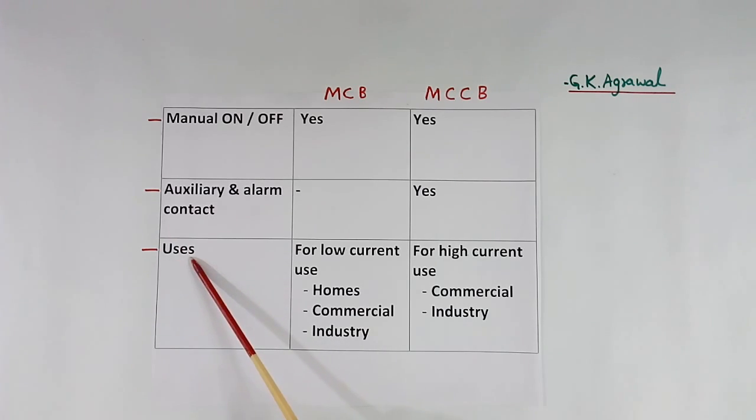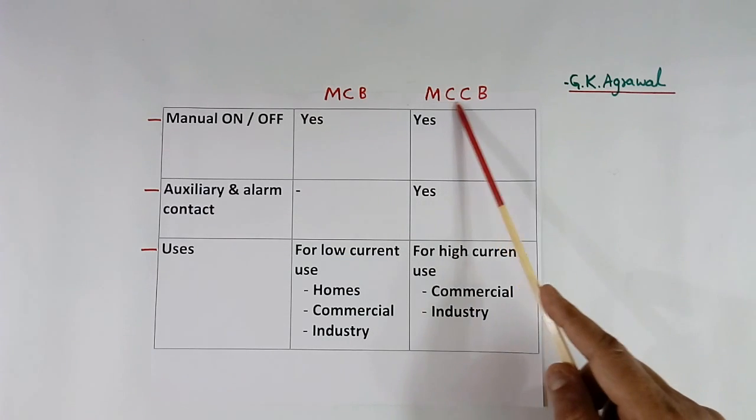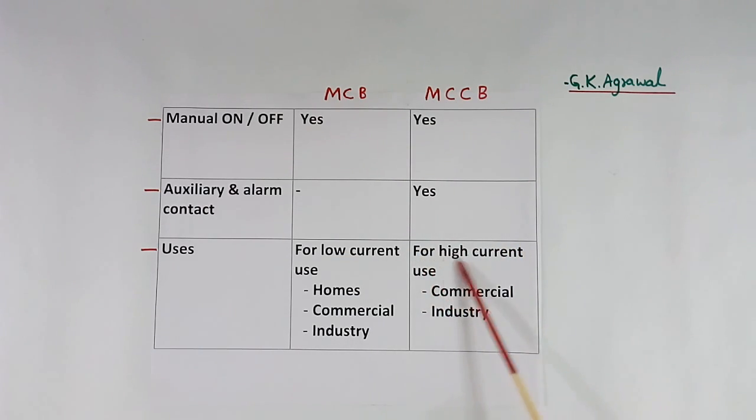Then usage. MCB is used for low current use in homes, in commercial establishments, and in industry. MCCB is used for high current use, like commercial and industry.